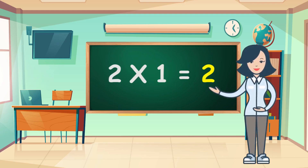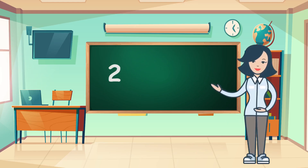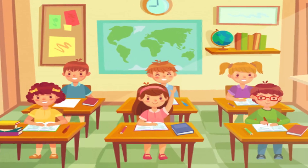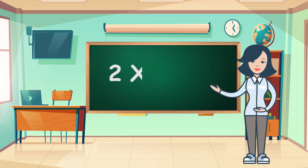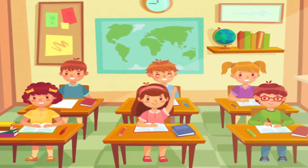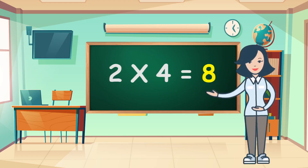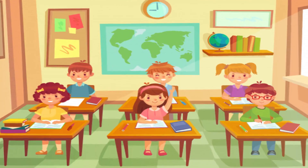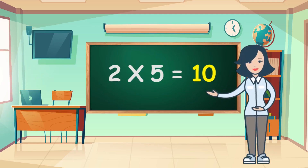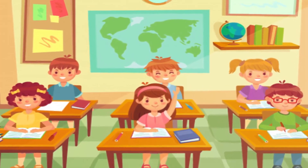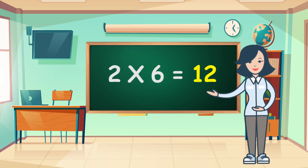Two ones are two. Two ones are two. Two twos are four. Two twos are four. Two threes are six. Two threes are six. Two fours are eight. Two fives are ten. Two fives are ten. Two sixes are twelve.